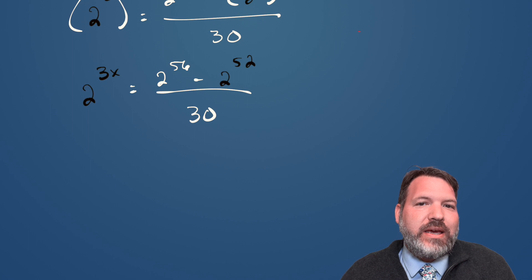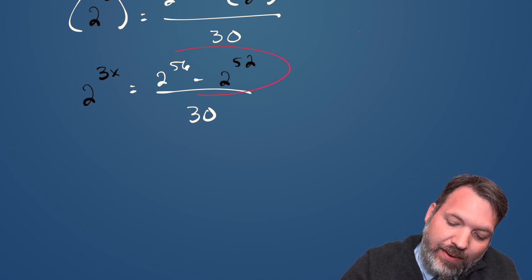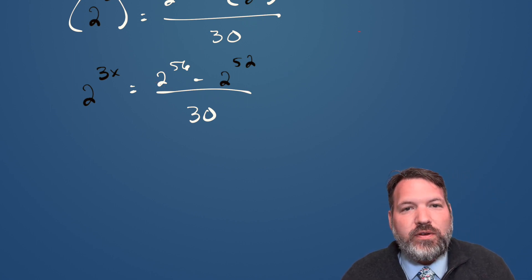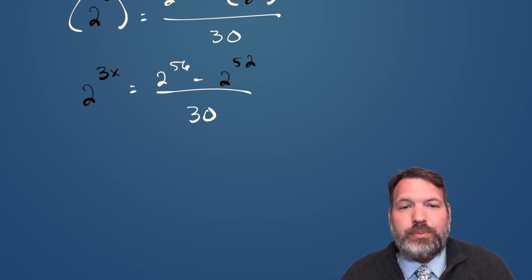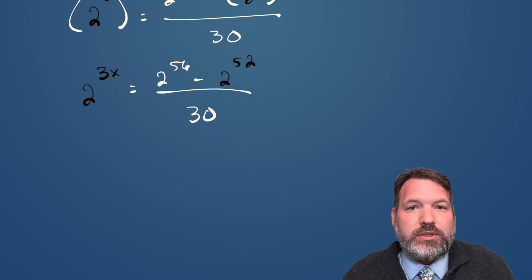Now, at this stage, we have to be careful. Students are always tempted to say, oh, 2 to the 56th minus 2 to the 52nd, isn't that something like 2 to the 4th? But no, there is no special rule for subtracting different powers of a common base. We have rules for multiplying and dividing and raising powers to powers,